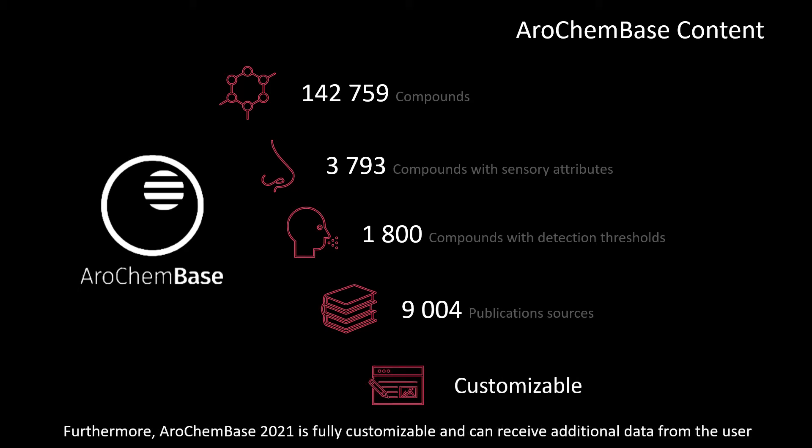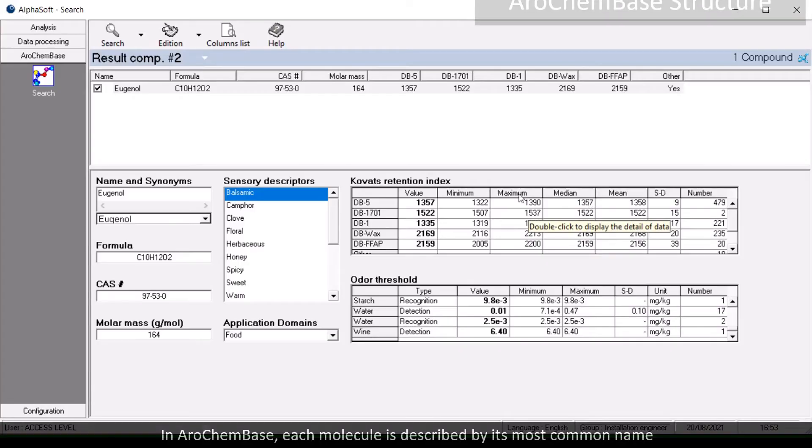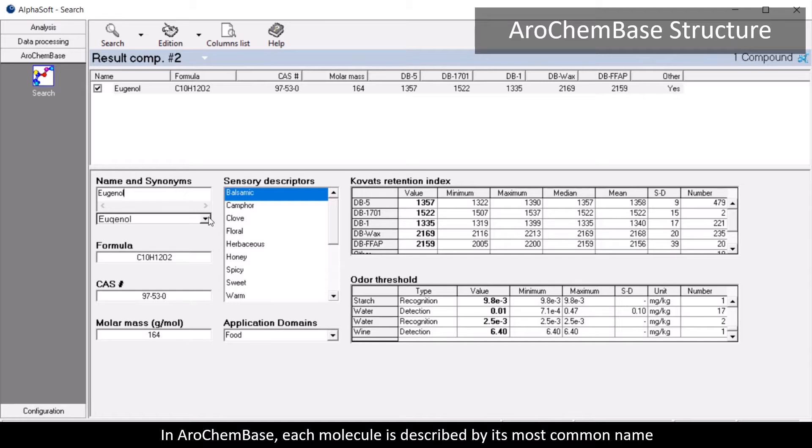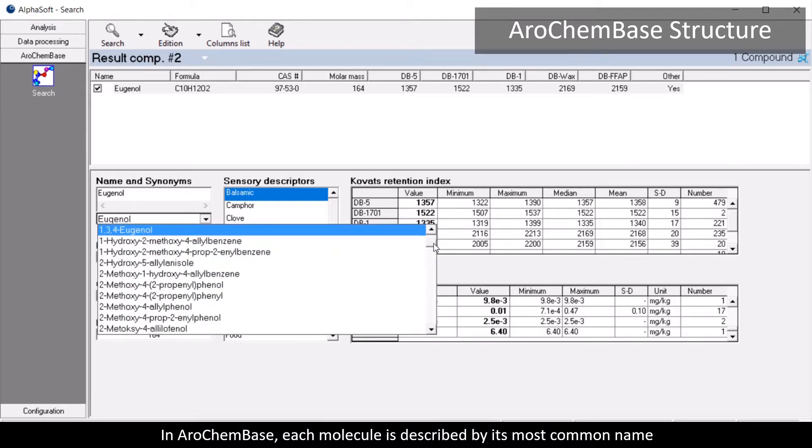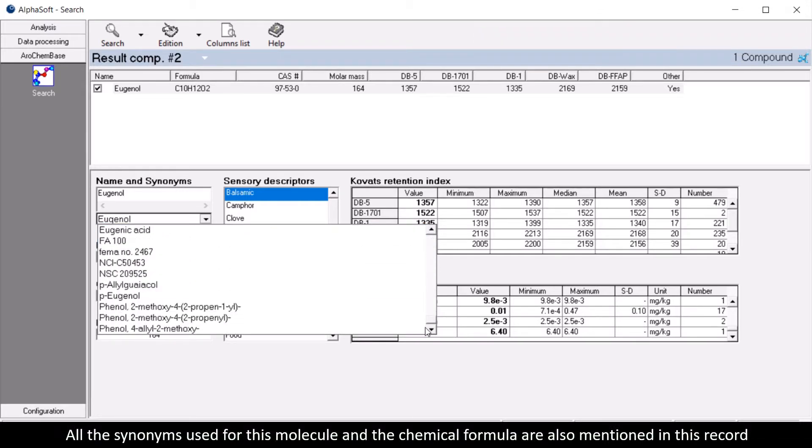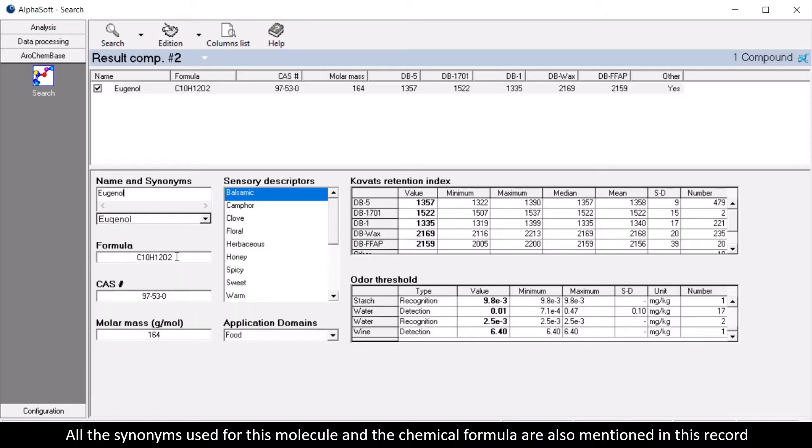Furthermore, AroChemBase 2021 is fully customizable and can receive additional data from the user. In AroChemBase, each molecule is described by its most common name. All the synonyms used for this molecule and the chemical formula are also mentioned in this record.